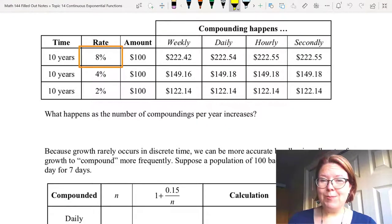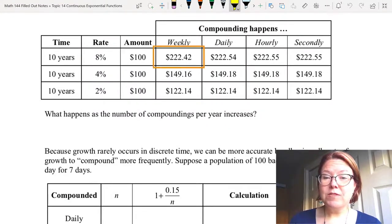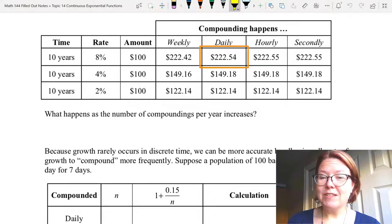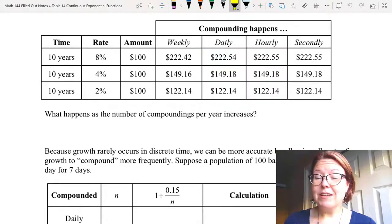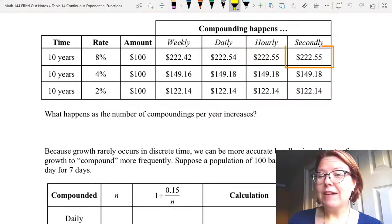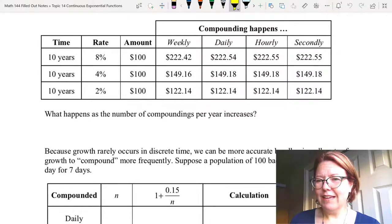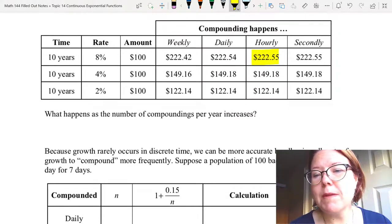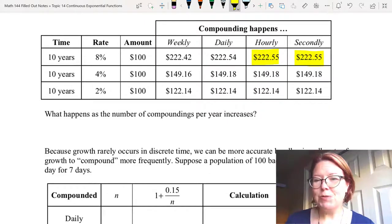For the interest rate of 8%, after 10 years there would be $222.42 in the account if we compounded weekly. If we compounded daily there would be $222.54. Hourly compoundings would give us $222.55, and if we compounded every second we would have $222.55 again. Now there actually is a slight difference between the result for hourly and secondly, but we don't see it when we round to the nearest cents. For the purposes of our bank account it looks to be the same amount. There's a negligible difference between those two compoundings.